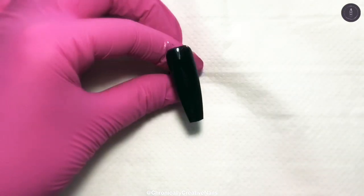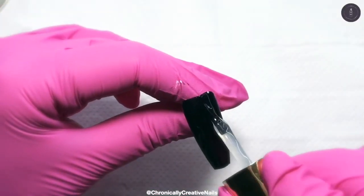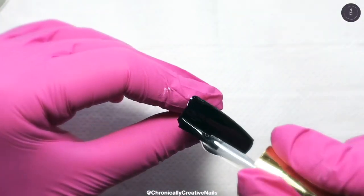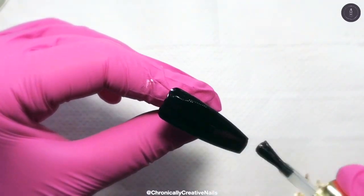There we go, so that's the first bit done. Now I'm going to take the two in one base from Premier Gel and I'm going to put a thin even coat of that all over just to give us a tacky layer.